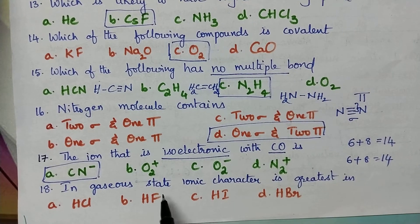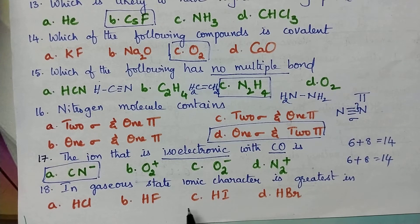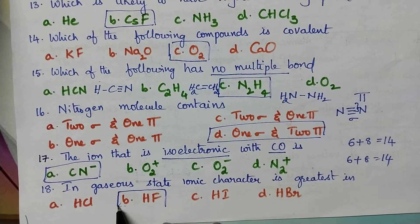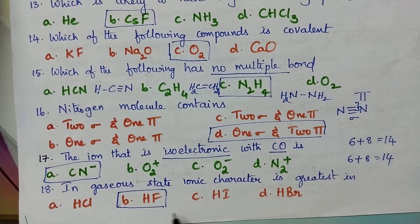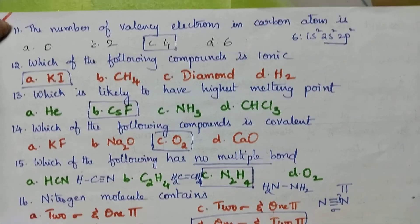In the gaseous state, ionic character is greatest in: we have to identify which compound contains the greatest ionic character. Ionic bond is formed between a cation and anion. If the cation is the same, we identify the size of the anion — if the anion is very small, it results in a stronger ionic bond. So option B is the right answer: hydrogen fluoride exhibits the greatest ionic character even in the gaseous state.